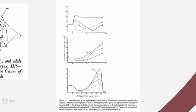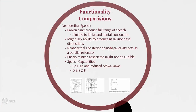These are diagrams that depict the typical area functions for the Neanderthal for the three lowest formant frequencies. Now that we have an idea of what the functionality was, they proved that Neanderthals couldn't produce a full range of speech. They were limited to labial and dental consonants — so anything made with the lips, the teeth, and the tongue. They didn't have the same control over their supraglottal area tract.